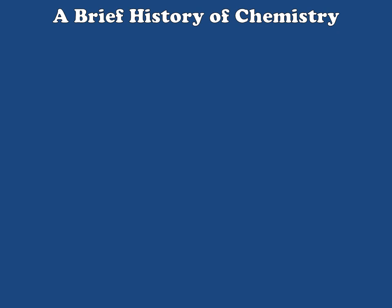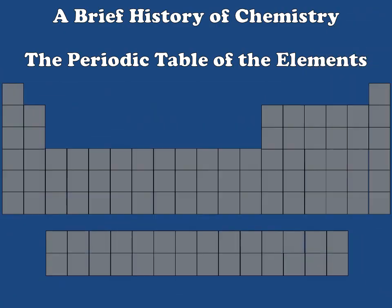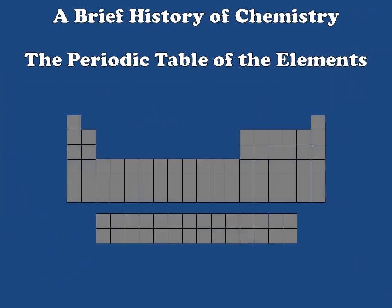Hi, everybody. Welcome to a Brief History of Chemistry lecture. Today we're going to talk about the Periodic Table of the Elements — how it was developed and what the thought processes were that eventually brought it about. We're used to seeing the modern version, which is a large, complex chart with many symbols and lots of information, and it can be a little overwhelming. So to start demystifying this, let's take a look at how great thinkers throughout the ages have organized what they believed to be elemental substances.